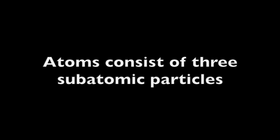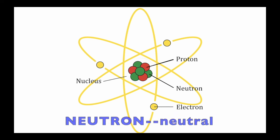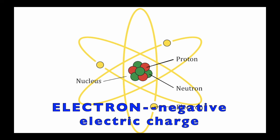As you should recall from a previous video, atoms consist of three subatomic particles: protons, which have a positive charge, neutrons, which are neutral, and electrons, which have a negative charge.